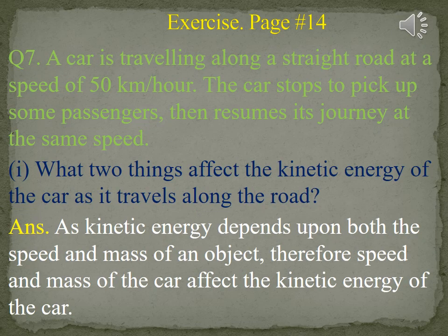Question number 7. A car is traveling along a straight road at a speed of 50 km per hour. The car stops to pick up some passengers, then resumes its journey at the same speed. Part 1: What two things affect the kinetic energy of the car as it travels along the road? Answer: As kinetic energy depends upon both the speed and mass of an object, therefore speed and mass of the car affect the kinetic energy of the car.